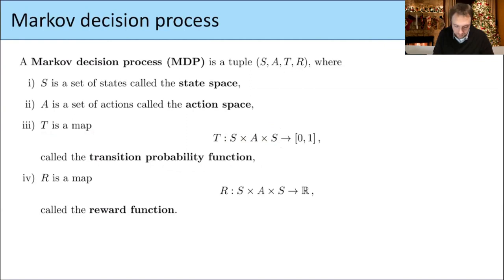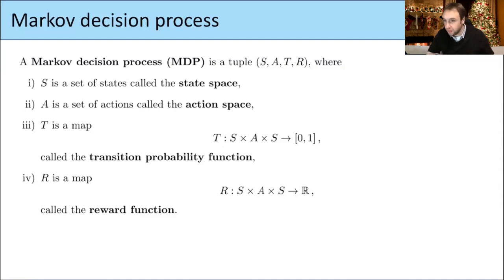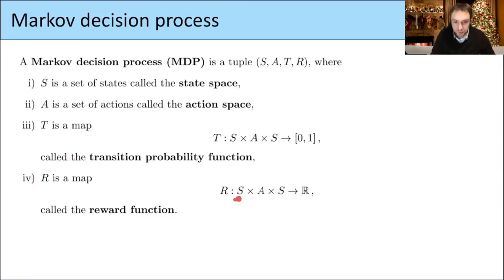In many examples, if we are in a certain state and do a certain action, there's often just one possible next state. For example, in our lecture hall Konbini example, if we move in one direction, there's just one possible state we can land in, so these probabilities are almost always zero except for one state. R is the reward function, which tells us what we get when we go from one state to another using a certain action — a positive real number means a positive reward, and a negative number means a negative reward.